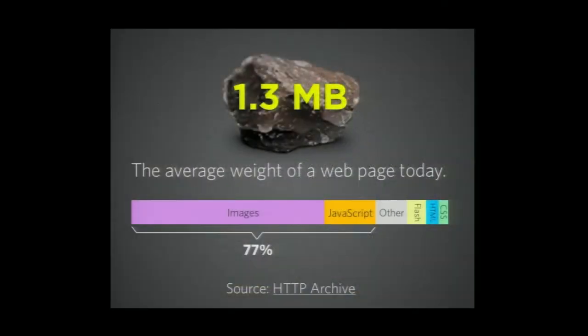1.3 megabytes — this is the average weight of a web page today, as chalked up by the HTTP archive. 67% of that weight is simply images and JavaScript. Two years ago we were around 700K; it's doubled in three years. And if all you did was add a media query to this 1.3 meg website and call it mobile friendly, you're still delivering this amazingly huge website over crappy networks. There's much more to think about than just a media query.